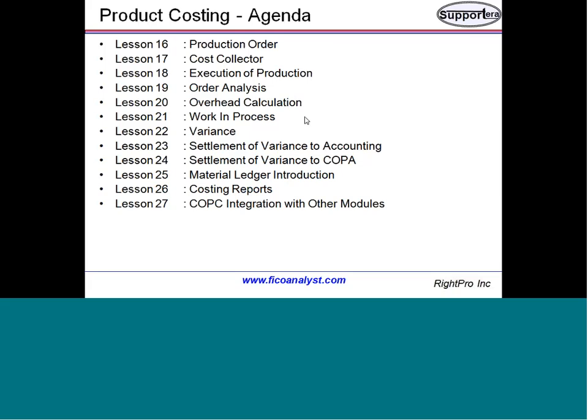There is a whole theory around variances with many variance categories: input price variance, output price variance, quantity variances, input quantity, output quantity, mixed price variance — many different types. We will see all of that, and we will also settle the variances into accounting, because that is the variance you are posting into accounting.